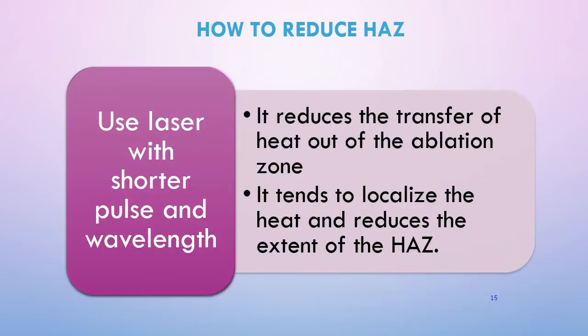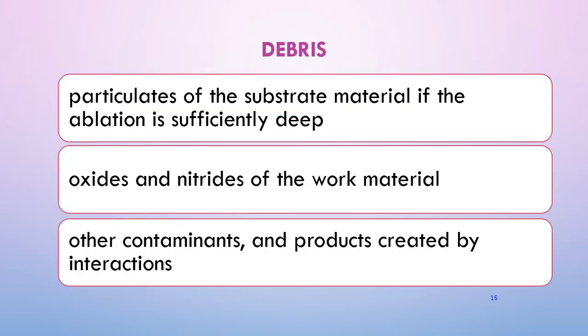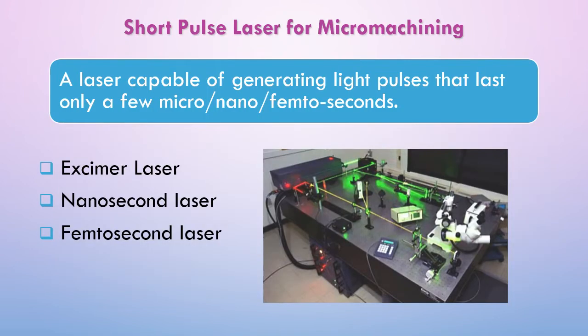The higher the thermal conduction during the laser process, the greater the HAZ area. In order to reduce the HAZ area, you can use a laser with a shorter pulse and shorter wavelength. This reduces the transfer of heat out of the ablation zone and tends to localize the heat, reducing the extent of the HAZ. Another issue with laser processing is the presence of particulates of substrate material if ablation is too deep, along with oxide and nitride layers and other contaminants.